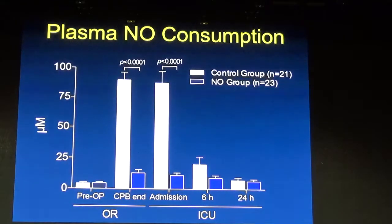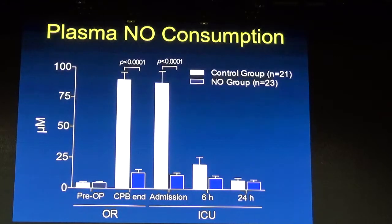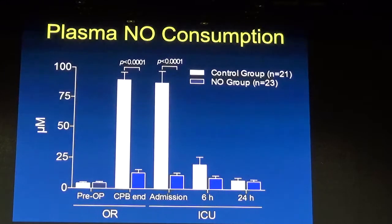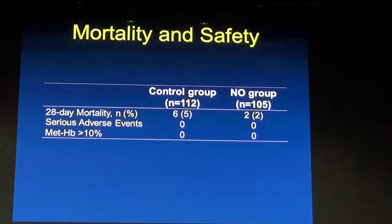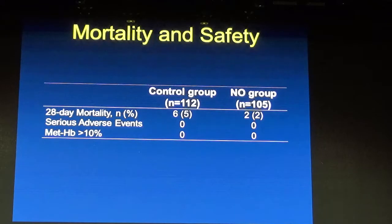The addition of nitric oxide to the system reduced and maintained plasma nitric oxide consumption at pre-operative levels, whereas in the control group nitric oxide consumption went very high. Mortality at 28 days was 5% in the control group and 2% in the nitric oxide group, with no major adverse events.